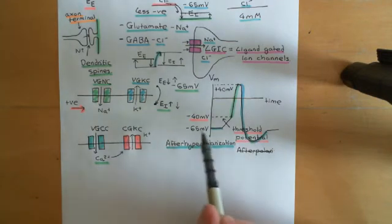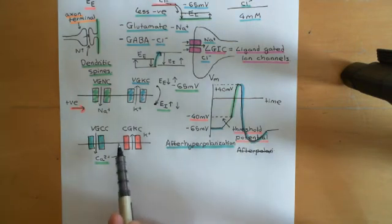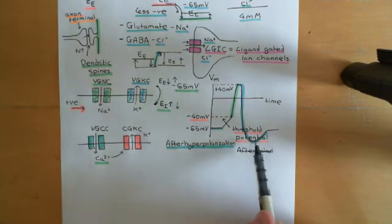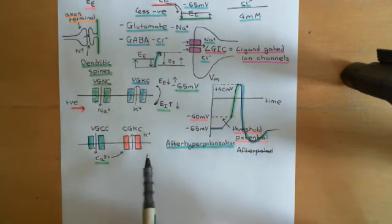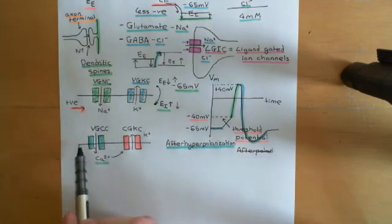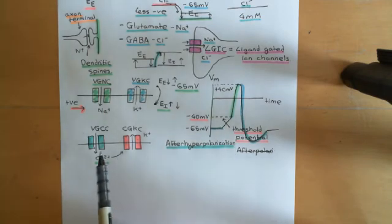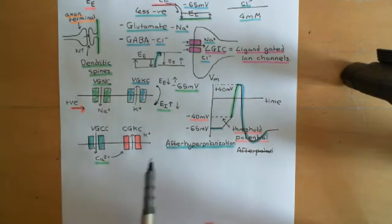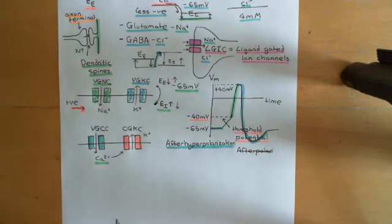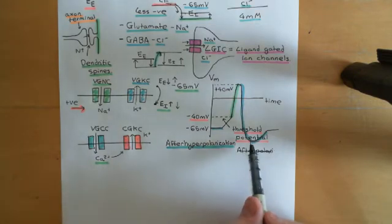You're continuing to allow potassium out of the cell, and that takes it right down to here until these channels start to finally close, as the calcium is removed from the intracellular fluid. The voltage-gated calcium channels will have closed by now because we're back below the threshold potential — so no more calcium is coming in. Calcium is extruded from the cytoplasm of the cell very, very quickly because it's quite toxic. Then the calcium-gated potassium channels will close.